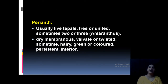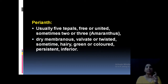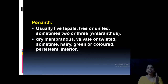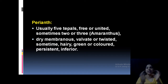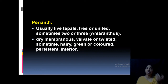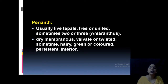Since this family comes under Monochlamydiae, the perianth has tepals — there are no sepals or petals, only tepals. Typically there are five tepals, though sometimes two to three (as in Amaranthus). They may be free or united, and are membranous — dry and scaly like onion skin — sometimes green or otherwise colored. The perianth is persistent until seed formation.